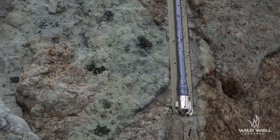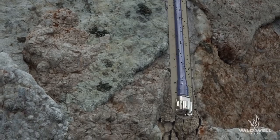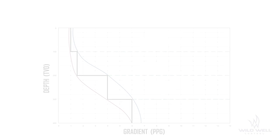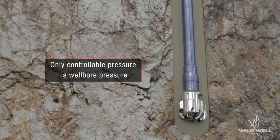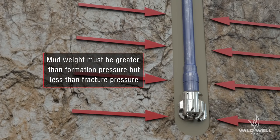Each formation has a drilling window that drillers must be aware of as they drill deeper. A drilling window is the space between formation pressure and fracture pressure. It is most important to understand that formation and fracture pressures are beyond your control. What is in your control is hydrostatic and bottom hole pressure. Drilling fluid must be heavy enough to hold back formation pressure, but not so heavy that it causes the formation to fracture.